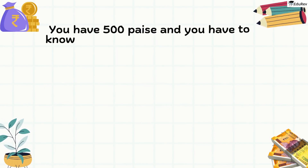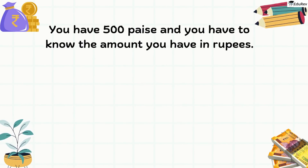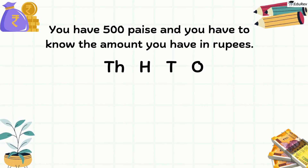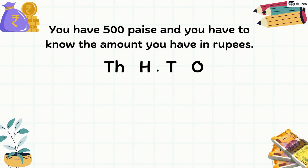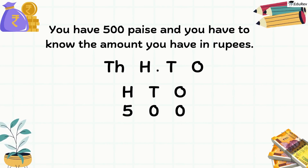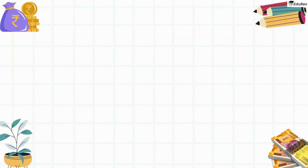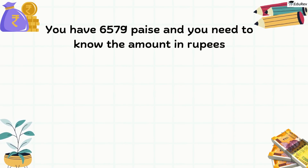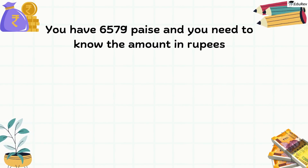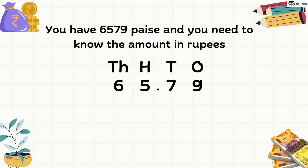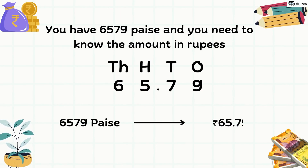Now, let's say you have 500 paise and you have to know the amount in rupees. To convert this amount, you simply put a point between the hundreds and tens paise. So in case of 500, we put a dot after 5 and 500 paise becomes rupees 5. Similarly, if you have 6579 paise, you put a point between 5 and 7 — that means you have rupees 65.79.